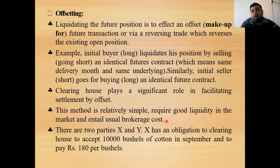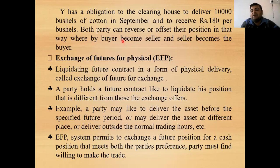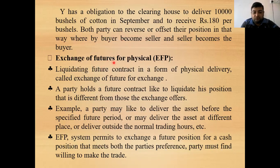For example, party X has an obligation to the clearing house to sell 1,000 bushels of cotton in September at ₹180 per bushel, and party Y has the obligation to deliver 10,000 bushels of cotton in September at ₹180 per bushel. Both parties can reverse their positions by offsetting — the buyer becomes the seller and the seller becomes the buyer — settling a long position with a short position and vice versa. Exchange of futures for physical (EFP) means liquidating a contract in the form of physical delivery, known as exchange of futures for physical.